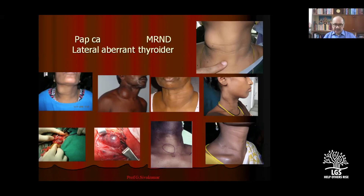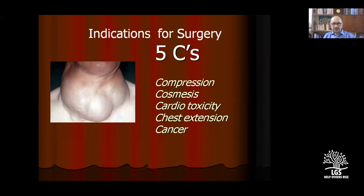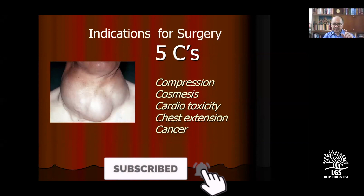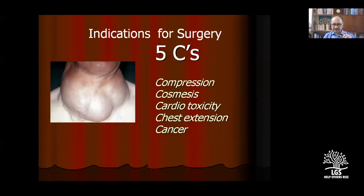What are the indications for surgery in multinodular goiter? Indications are five points: compressive symptoms such as elevated hand producing superior vena cava syndrome; cosmetic reasons — for example, a TV anchor needing a presentable neck; cardiac toxicity; secondary toxicity; chest extension into superior mediastinal syndrome; and suspicion of malignancy. If any of these five are present, surgery is better advised.